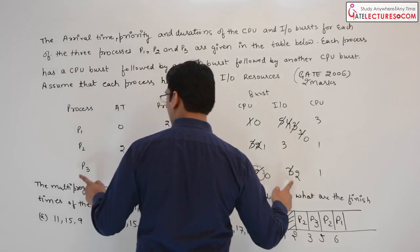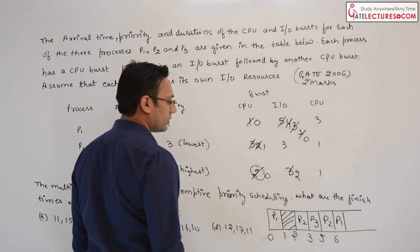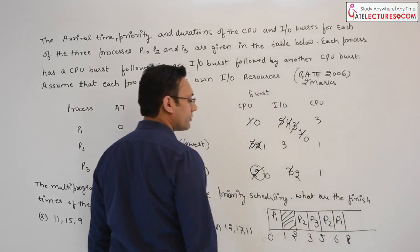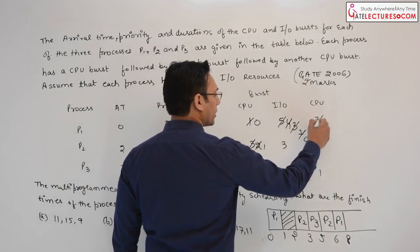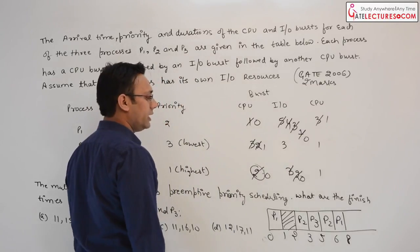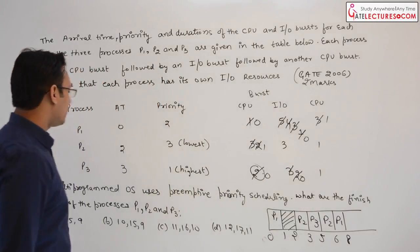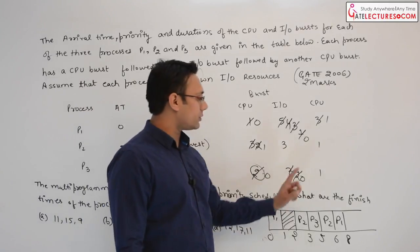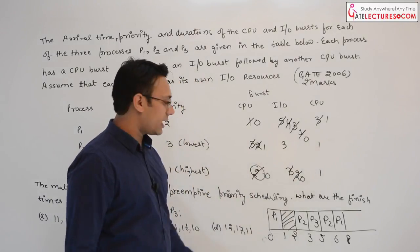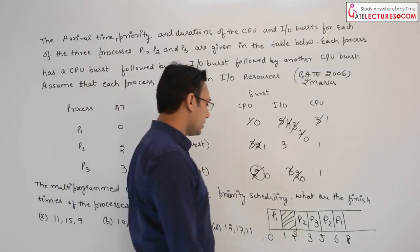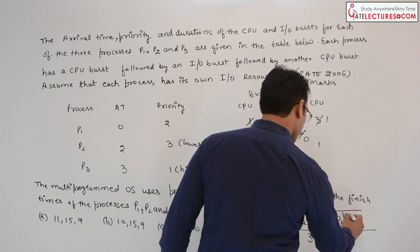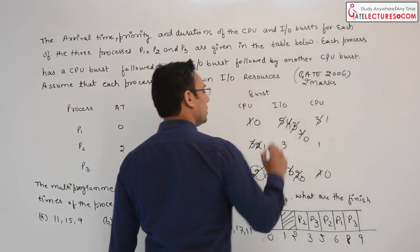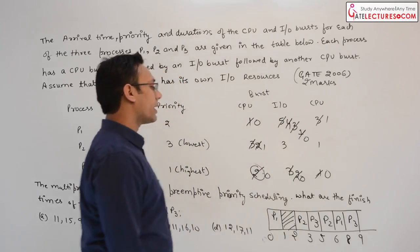After those 2 units of time, process P3 will also be available. Therefore, process P1 will be executed till time unit 8, finishing its remaining CPU work, and then P3 — which has the highest priority — will be executed and finished at time unit 9.